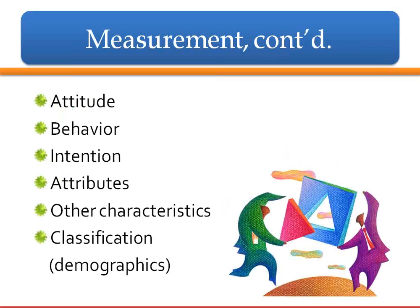When measuring, this ties back to operational definitions. Are you measuring people's attitudes, what they're doing, what they intend to do, some of their attributes or other characteristics, or classification and demographics? Demographics include gender, age, race, ethnicity, income, and education. Then we look at the question content of the questionnaire. Dichotomous questions ask them to choose one of two options — for example, do you prefer self-checkout or face-to-face checkout? Dichotomous means two choices.